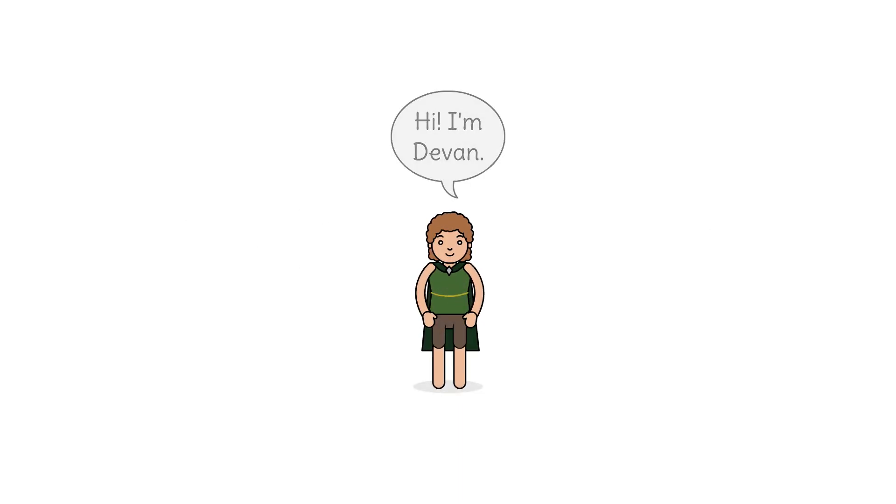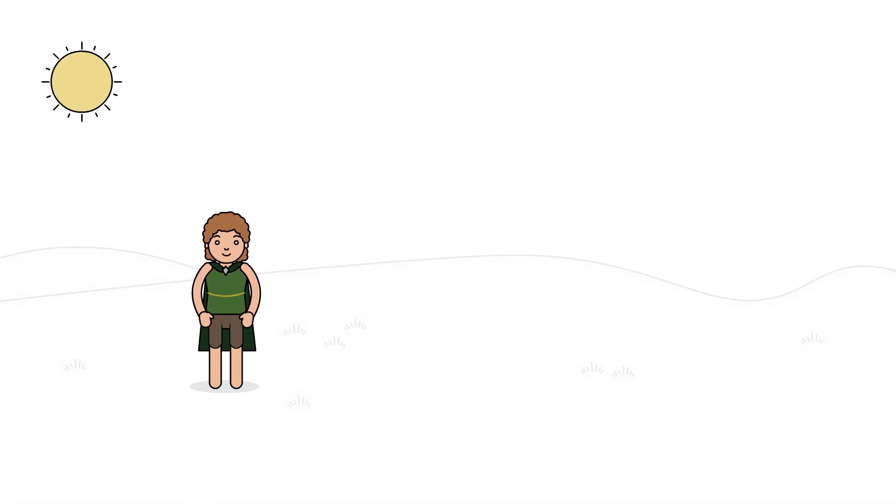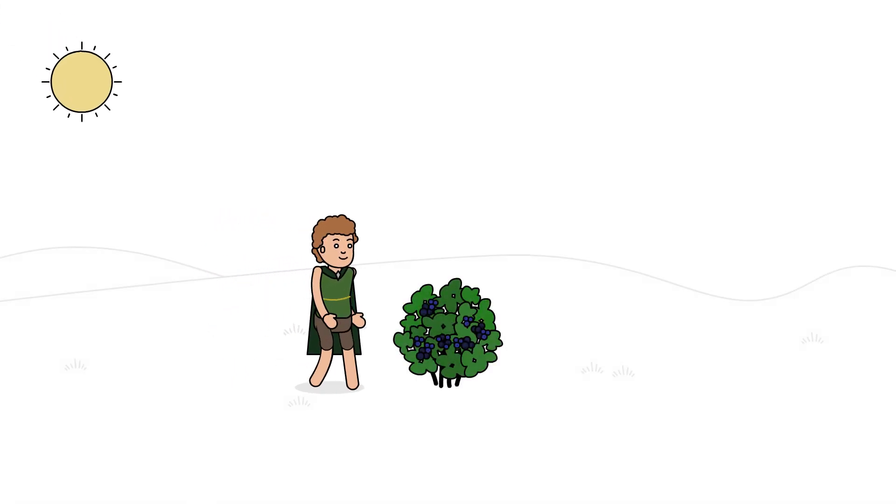This is Devon. Devon lives in a magic meadow. He walks to school and picks a few wild blueberries to eat.